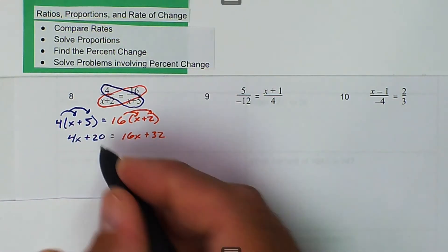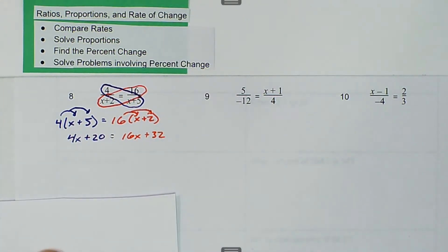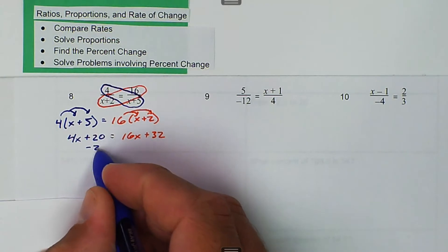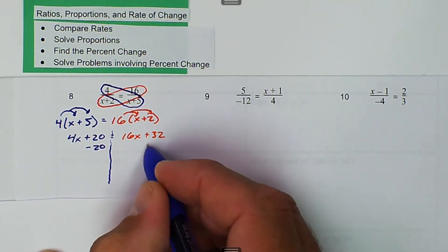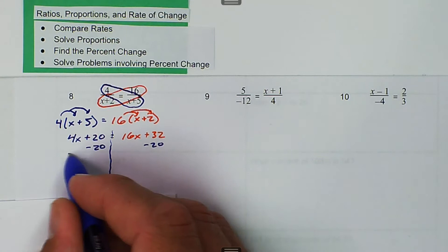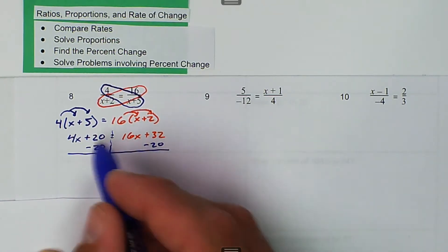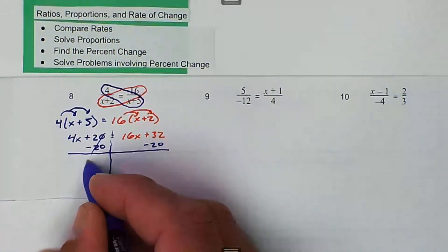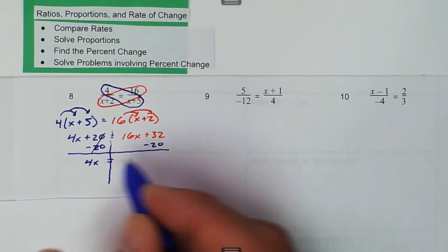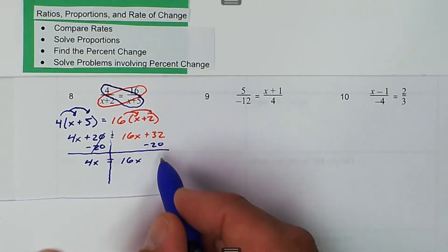Then we can work on getting our like terms together. I like working with positive numbers, so I'm going to subtract 20 from both sides of the equal sign. The 20s cancel over here, and we're left with 4x on the left. And on the right we're left with 16x plus 12.